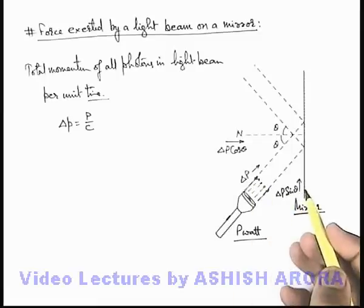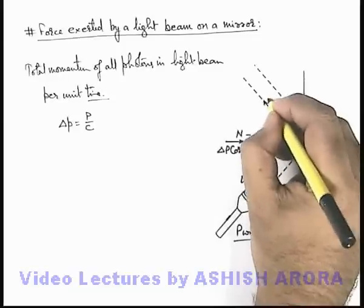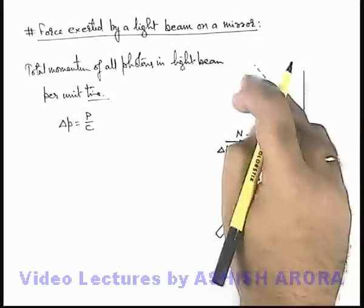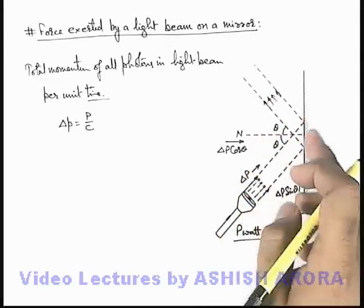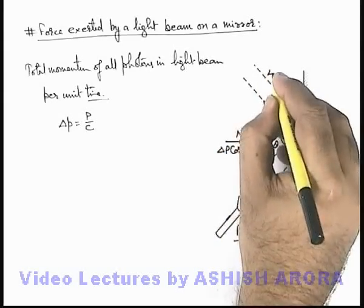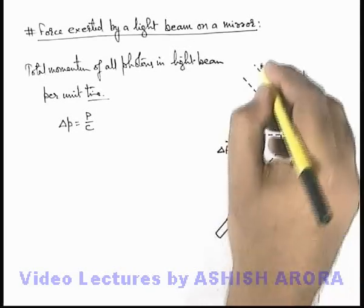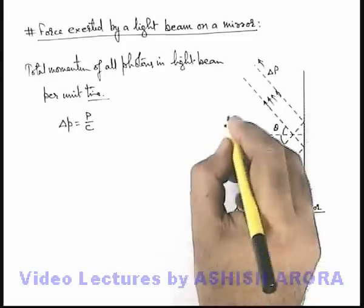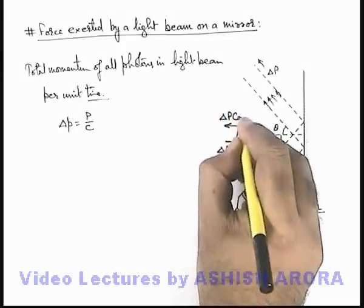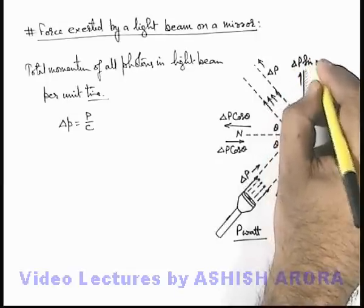When the light is incident and is reflected according to laws of reflection in the same direction at an angle theta to the normal on the other side, we can see the momentum reflected per second is again delta P. So if again it is at an angle theta with the normal, we can see that it is reflected in the opposite direction as delta P cos theta, and parallel to the mirror it is delta P sine theta.